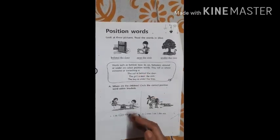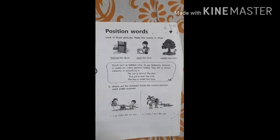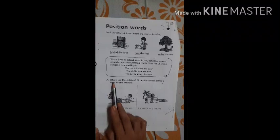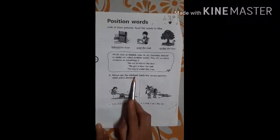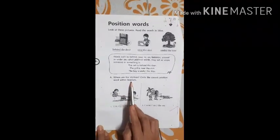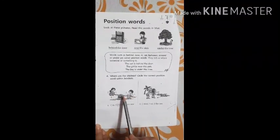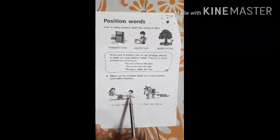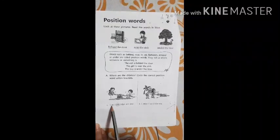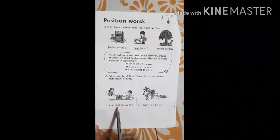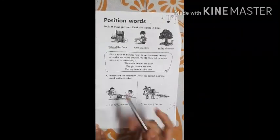After this we will solve these examples. Where are the children? Circle the correct position word within brackets. So here you can see the children — they are doing something and we have to circle the correct position word. In or on the seesaw — the children are on the seesaw. So here I circle 'on'.